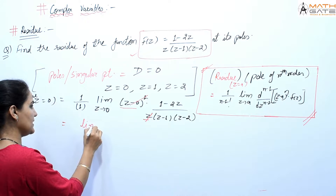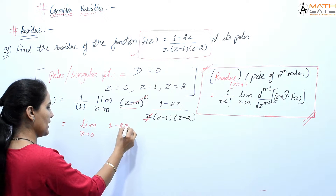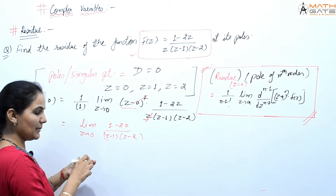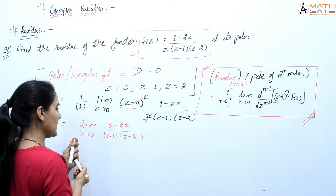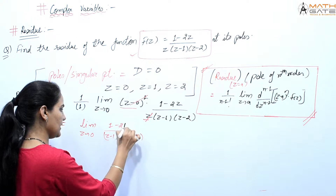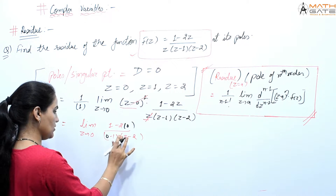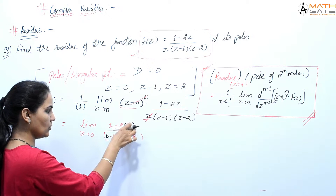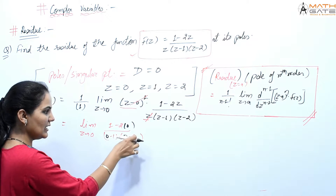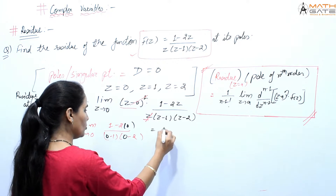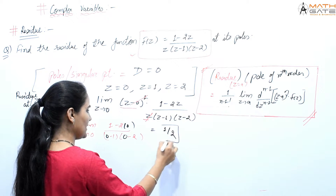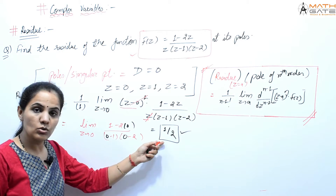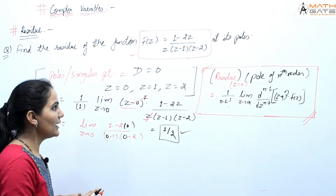Applying the limit z→0: numerator gives 1−0 = 1, denominator gives (0−1)(0−2) = (−1)(−2) = 2. So residue at z = 0 is 1/2.